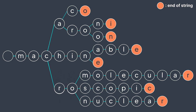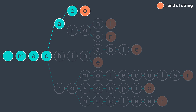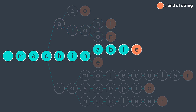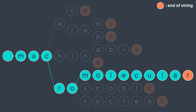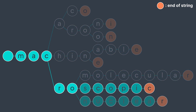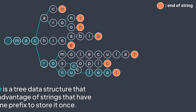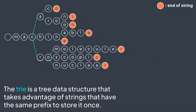What we did is build the trie of these words. Each root-to-end-of-string node represents a string — we have Macaco, Macaroni, Macroon, Machinable, Machine, Macromolecular, Macroscopic, and Macronuclear. The trie is a tree data structure that takes advantage of strings that have the same prefix, storing it once.